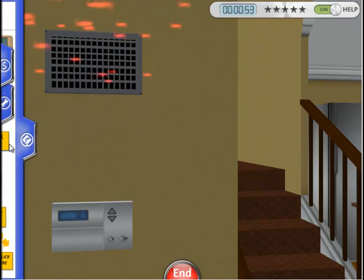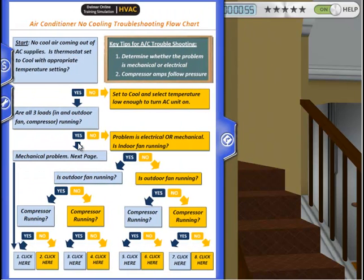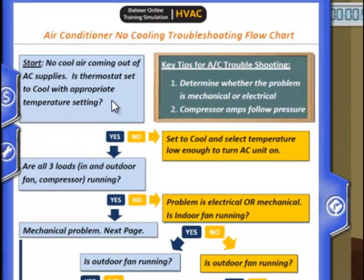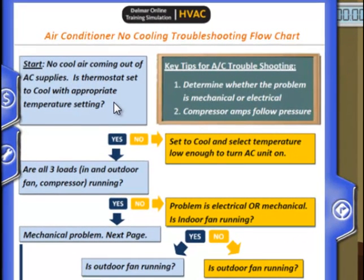Let's take a look at our troubleshooting guide to understand what the problem could be. The third tab on the left is the troubleshooting tab. We did confirm that the thermostat was set to cool with an appropriate temperature setting. The first major step in assessing an air conditioner is determining what loads are running. This includes the indoor fan, outdoor fan, and compressor. Troubleshooting usually employs a process of elimination, which will save time and money.